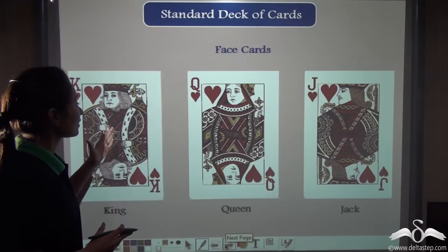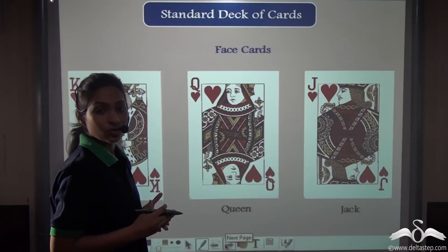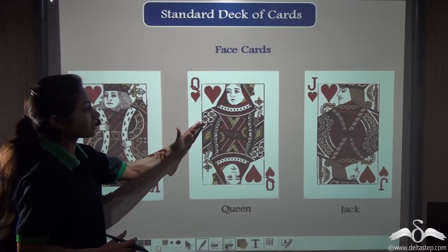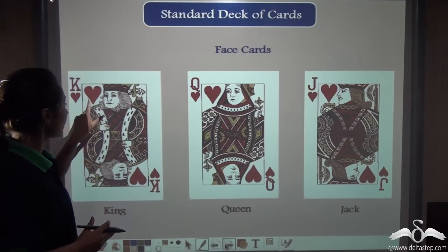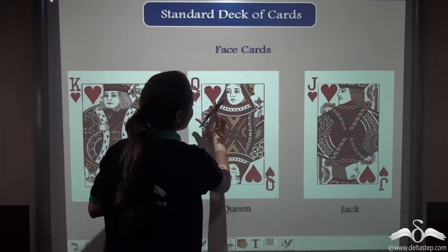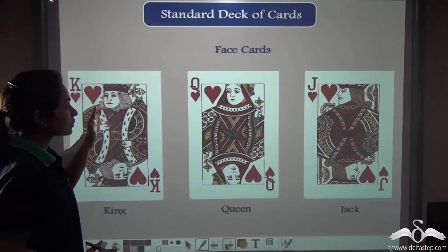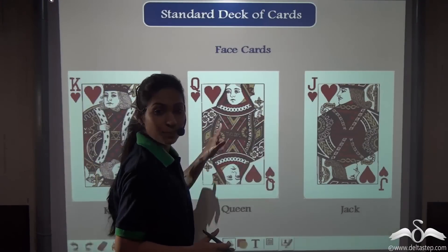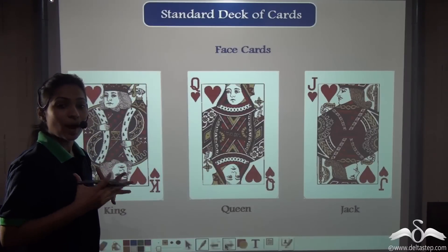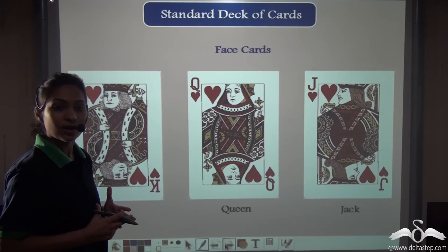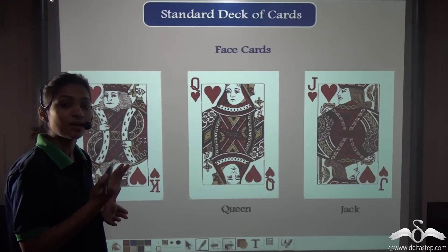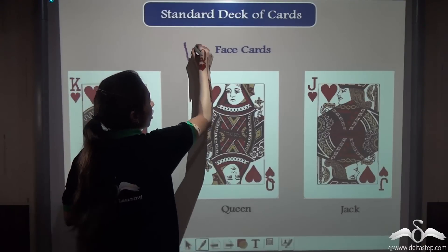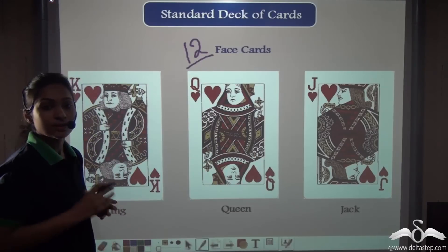There are always 3 face cards in each of these suits — King, Queen and Jack. So you will find 3 face cards in each suit. These face cards here represent cards of Hearts; you can see the heart symbol. Similarly, you will see these 3 cards in all 4 suits representing Diamonds, Spades and Clubs also. So there are 3 into 4 = 12 face cards in the total standard deck of cards.